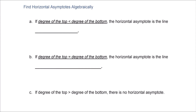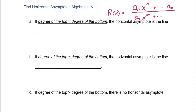We'll look at finding horizontal asymptotes algebraically. Recall the generic definition of a rational function with leading term a sub n x to the n in the numerator and b sub m x to the m in the denominator. Really, all we're concerned about is the leading terms — more specifically, their degrees. If the degree of the top is less than the degree of the bottom, the horizontal asymptote is automatically y equals 0, basically just the x-axis.